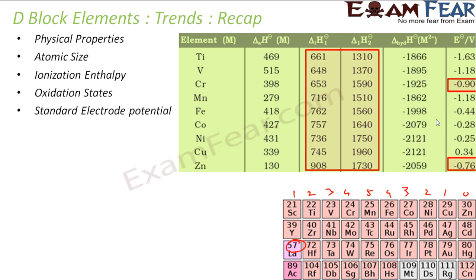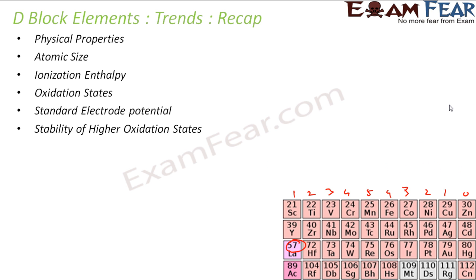Then we have the stability of higher oxidation states. The higher oxidation state is typically achieved when the transition metal forms bonds with oxygen and fluorine. Examples include CrF₆ and MnO₃F, in which the metals have higher oxidation states. This is because oxygen and fluorine have high electronegativity and small size, so transition metals typically form higher oxidation states with these elements.